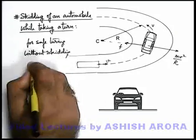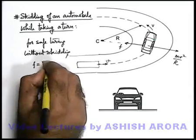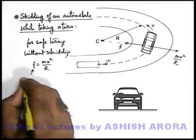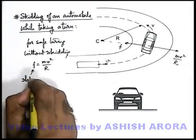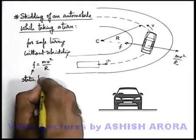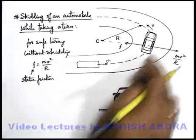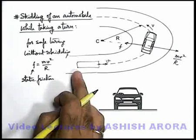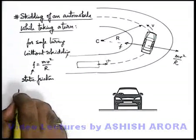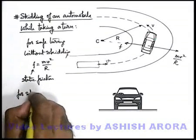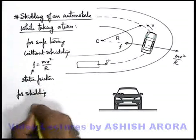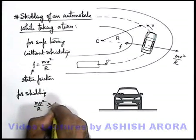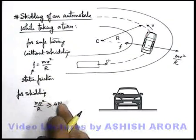For safe turning without skidding, the friction should balance mv²/r, and this friction should be static friction. Then only the car will be able to take a safe turn, as the wheels will experience an inward static friction. For skidding to occur, mv²/r must be more than or equal to μN, that is the limiting value of friction.